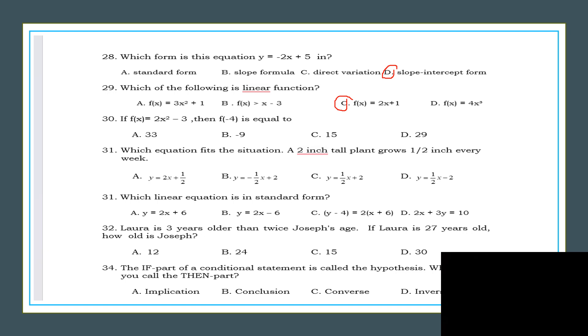Number 30. If f of x equals 3x squared minus 3, then f of negative 4, that means you replace x with negative 4. The answer is 29.